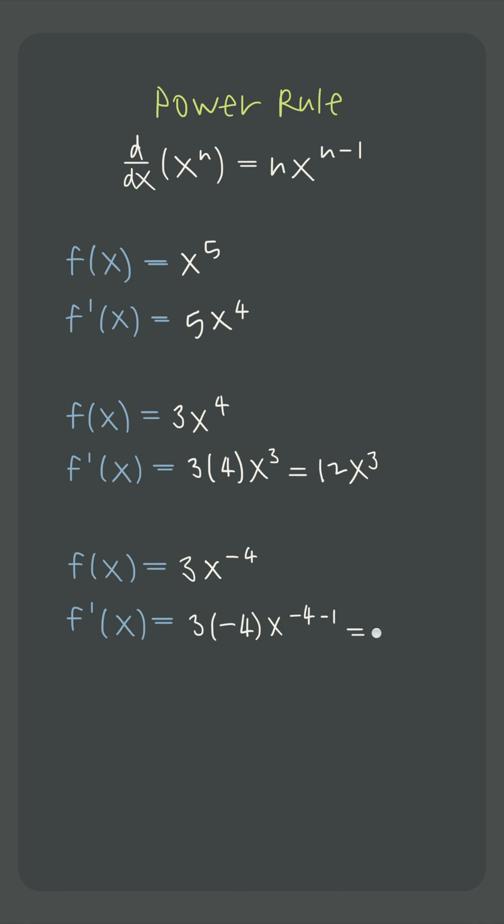So the derivative here is 3 times negative 4, or negative 12, times x to the negative 4 minus 1, or negative 5.